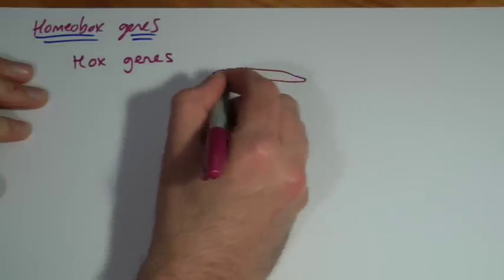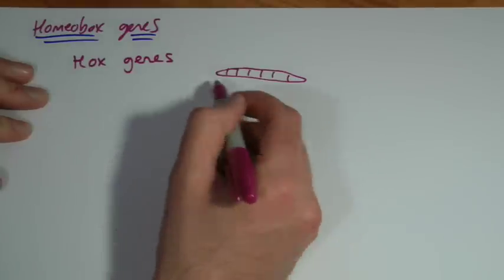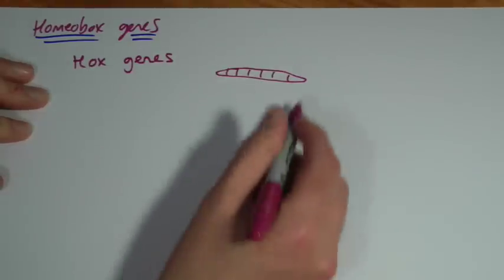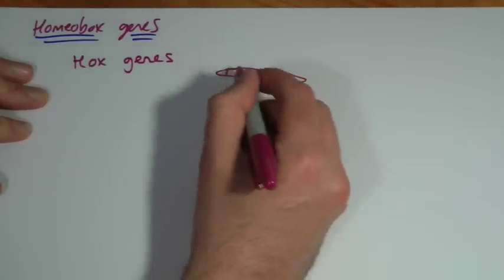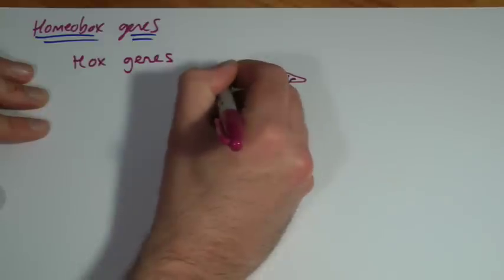So if you take something simple like a worm, a segmented worm - think of an earthworm if you like - its body is in sections. If you think of something a little bit more complicated, like say a centipede, and I'm making this very, very simple.